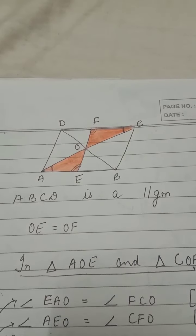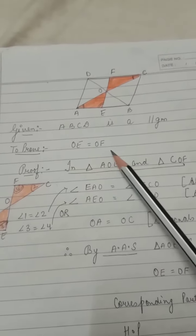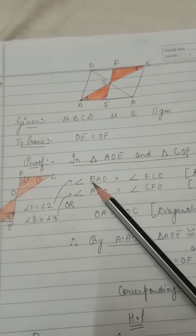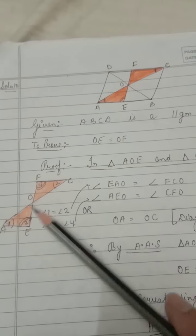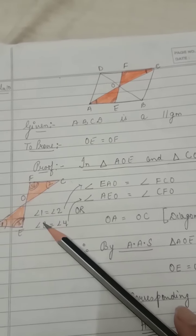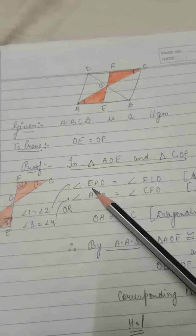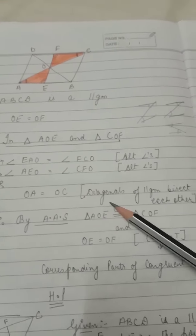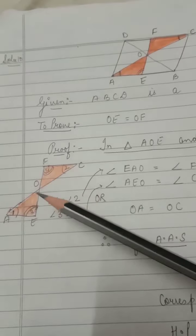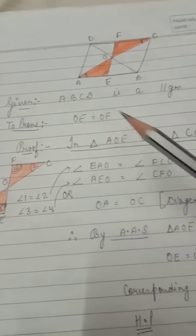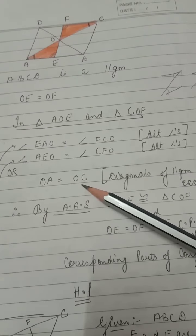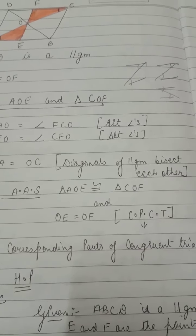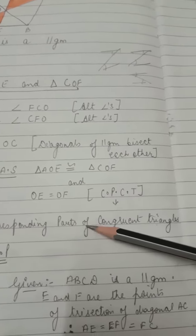Given: parallelogram ABCD; to prove: OE = OF. In triangles AOE and COF, angle 1 = angle 2 (alternate angles, i.e., angle EAO = angle FCO) and angle 3 = angle 4 (alternate angles, i.e., angle AEO = angle CFO). Also, OA = OC because diagonals of a parallelogram bisect each other. So by AAS the triangles are congruent, and therefore OE = OF by CPCT (Corresponding Parts of Congruent Triangles).